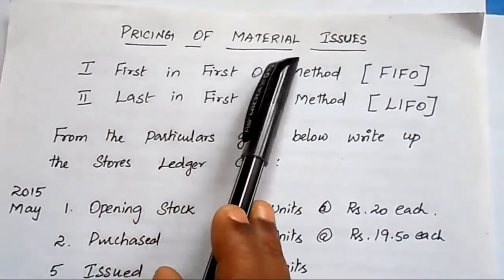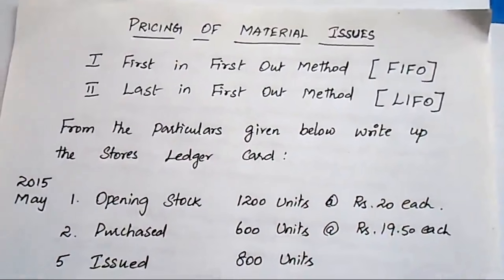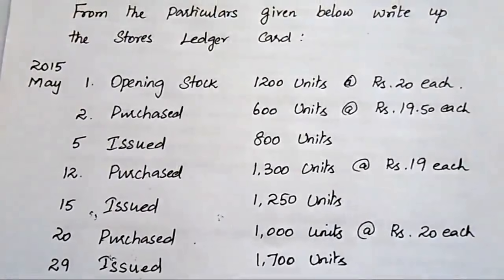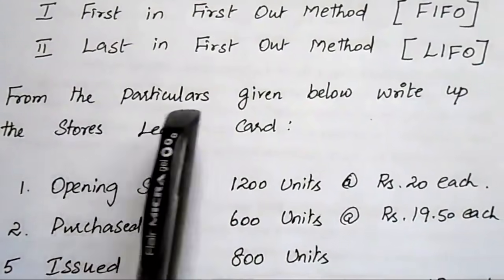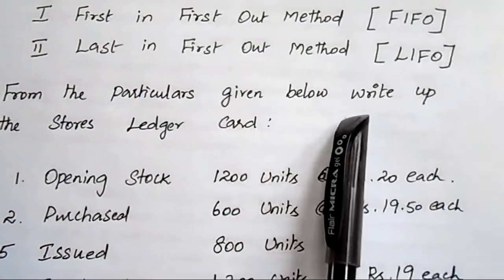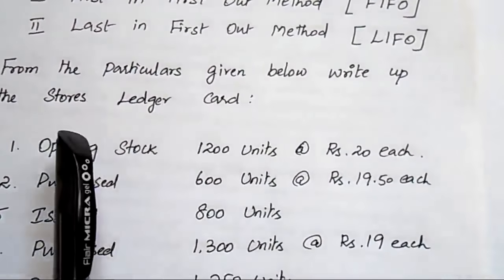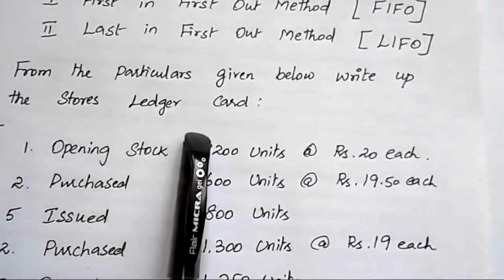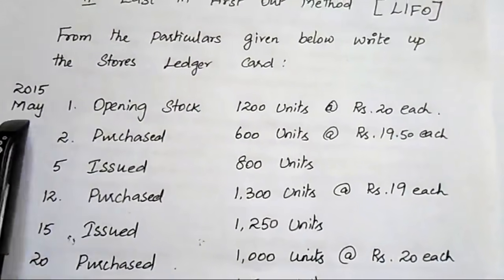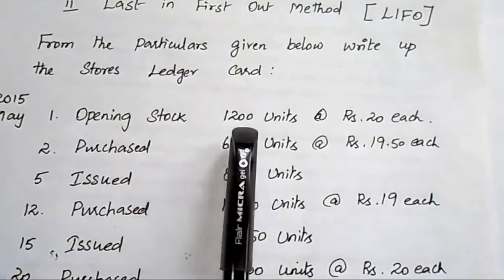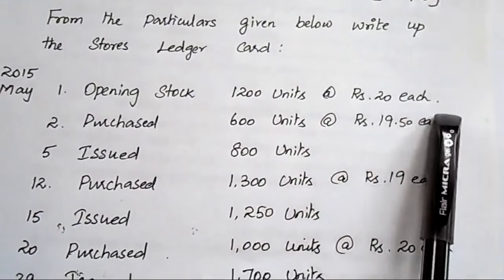This is called pricing of material according to the FIFO method. Let us see the problem. From the particulars given below, write up the store's ledger card using the FIFO method. The first entry is: 2015 May 1st — opening stock, 1200 units at the rate of ₹20 each.